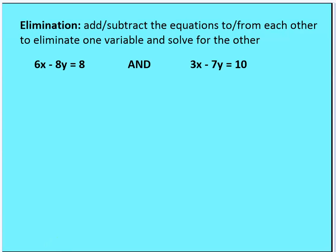Now we want to talk about solving systems of linear equations through elimination. This is a process you've likely already been taught in basic algebra. You want to add and subtract equations to eliminate one variable and solve for the other. You may need to manipulate the two equations so that when you add them vertically — similar to multi-digit column arithmetic — one variable is eliminated and you're left with the other.